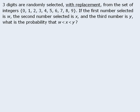For the first solution, let's begin by determining the total number of outcomes of this experiment. To do this we will take the task of selecting three numbers and break it into stages. One stage is selecting the first number W, one stage is selecting the second number X, and another stage is selecting the third number Y.